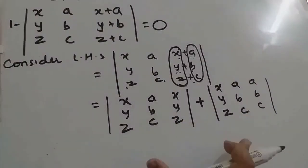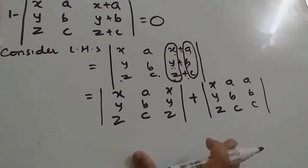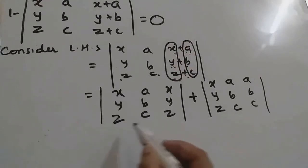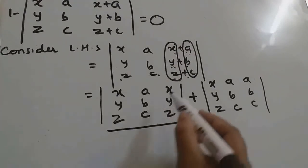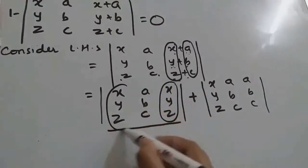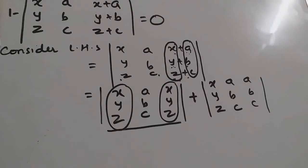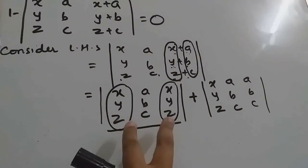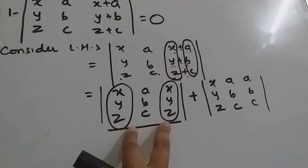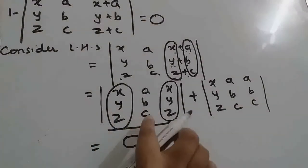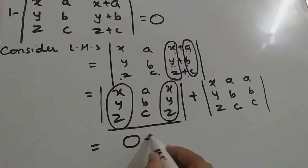Now observe this determinant. This column, these two columns are same. So one more property we have. If in a determinant any two row or column are identical, that determinant value we can write directly as 0. Isn't it? So this determinant value is 0. What reason we can write? By property, since two columns are identical here.